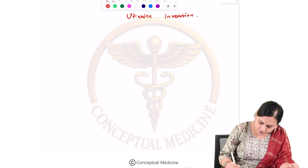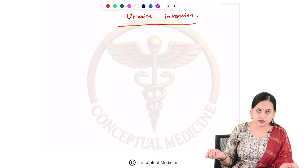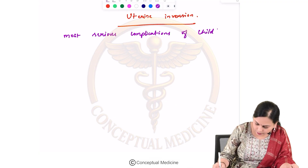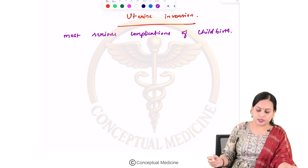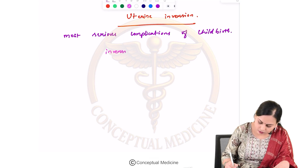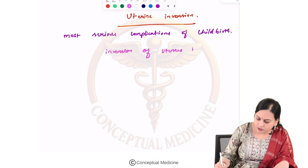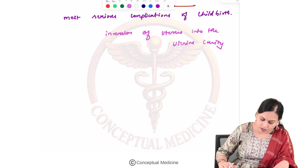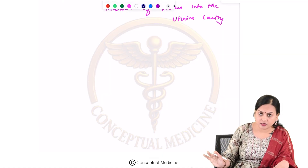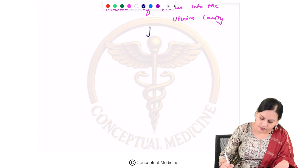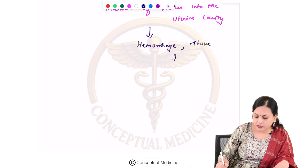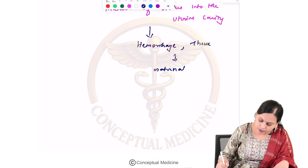Uterine inversion is one of the most serious complications of childbirth. It is the inversion of the uterus into the uterine cavity. Most of the time this does not occur, but if it does, there is a high risk of hemorrhage and shock, which can result in maternal mortality.